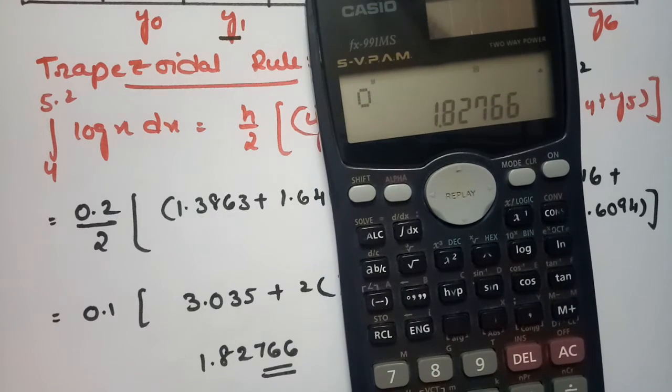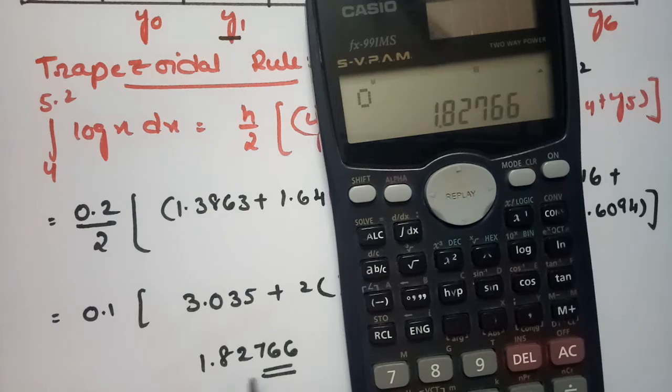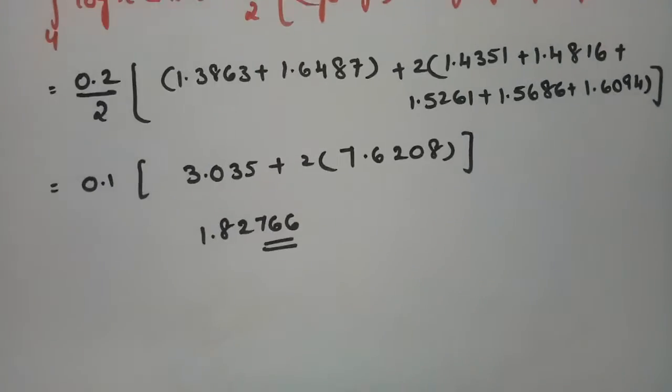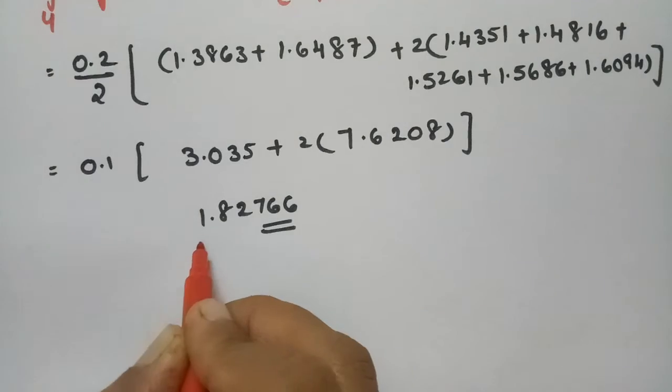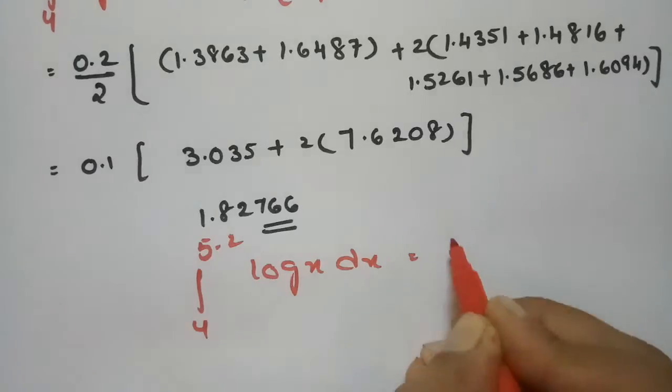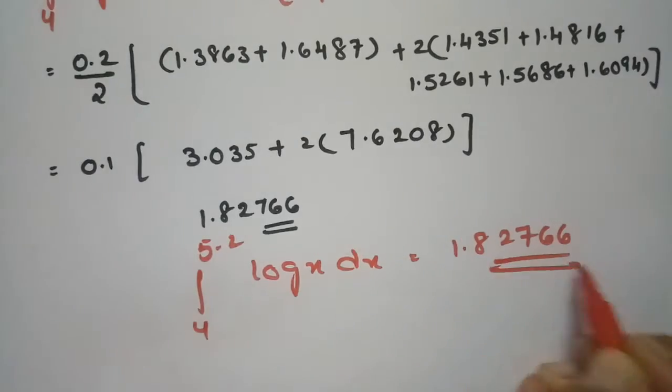So this is the value according to our question that is 1.82766. Therefore we got the value of integral 4 to 5.2 log x dx value is 1.82766.